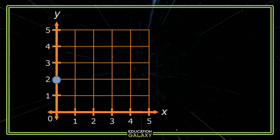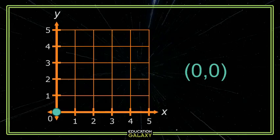What if the point is here, on both of the zeros, at the origin? Well, that's simply the point 0, 0. Makes sense, right?